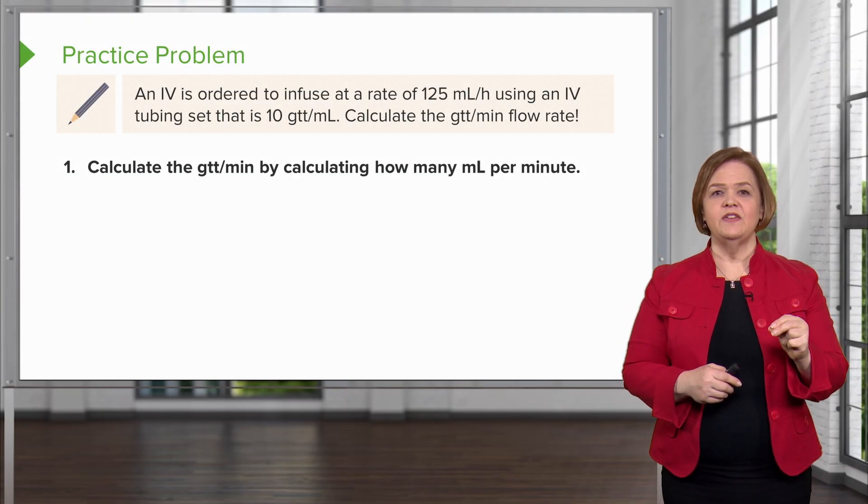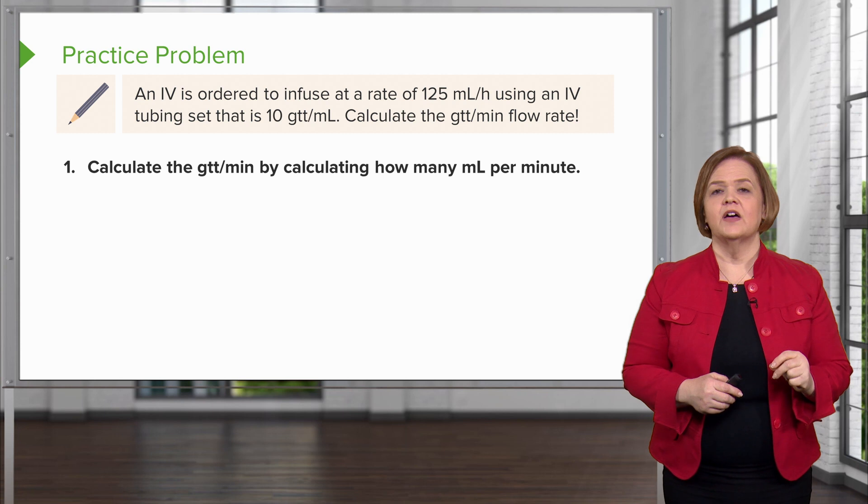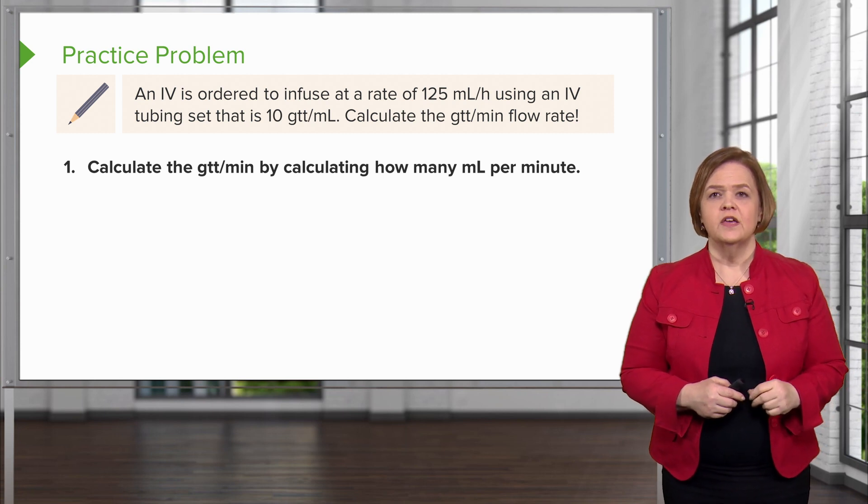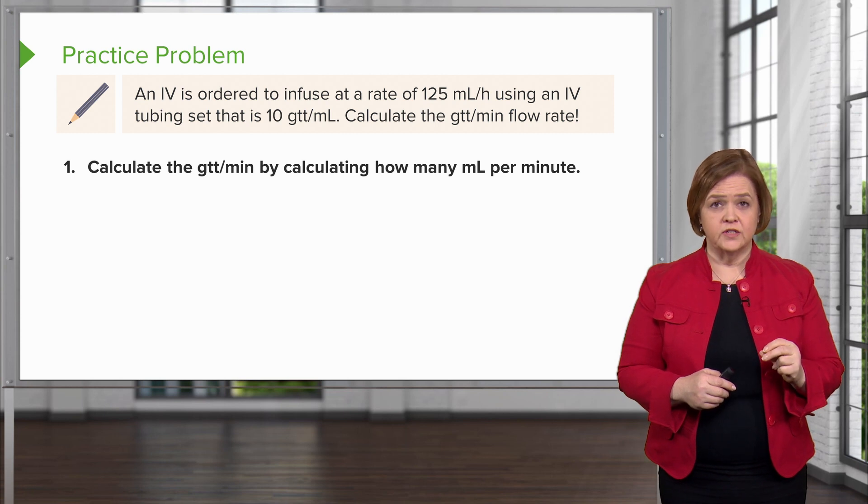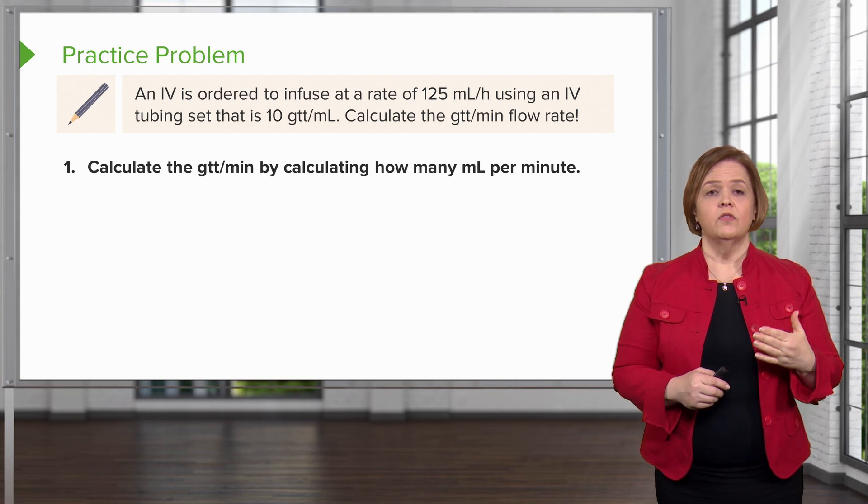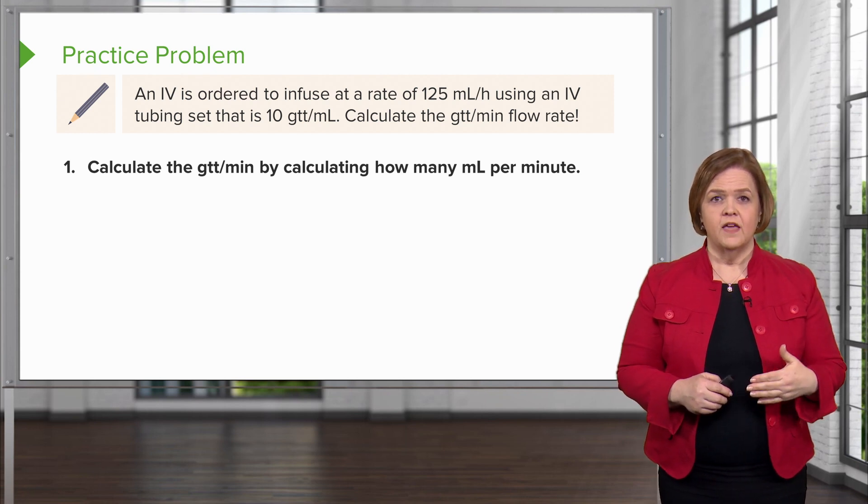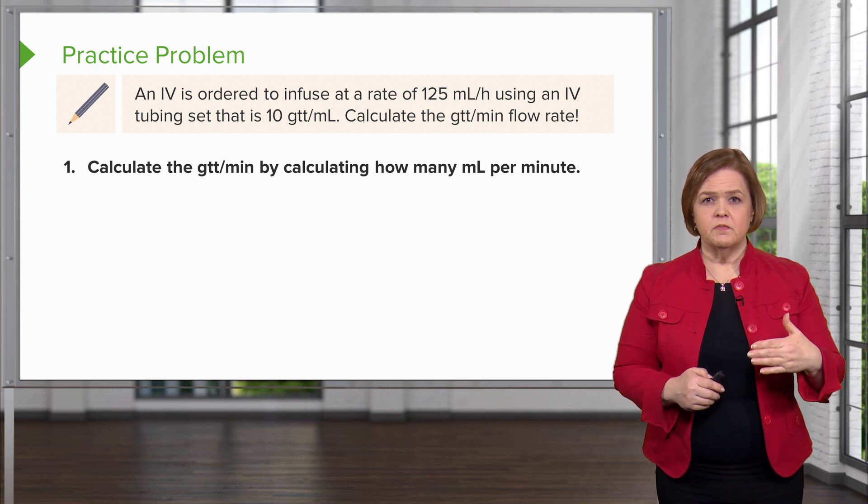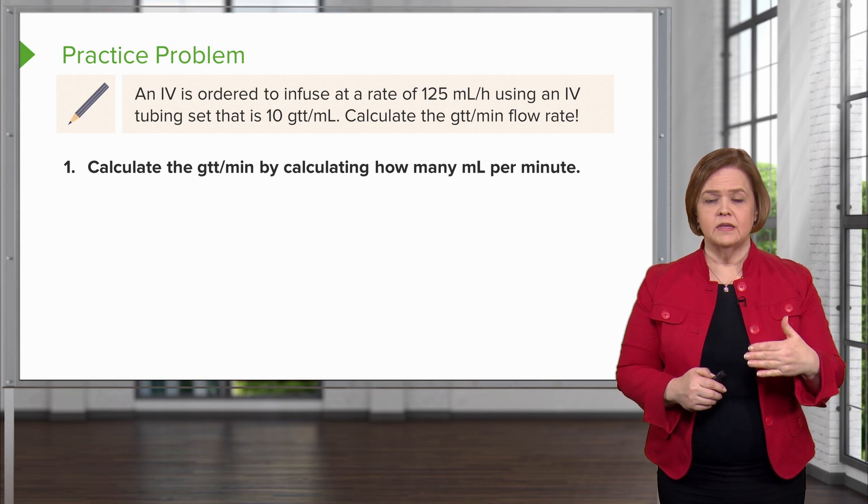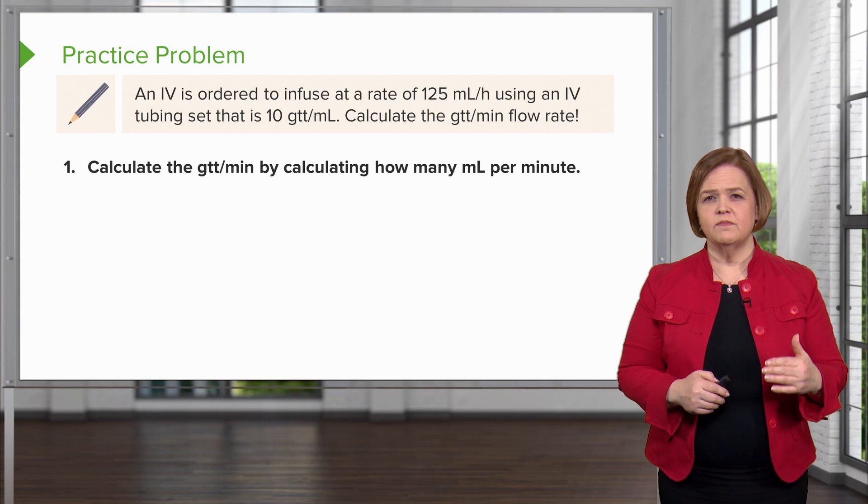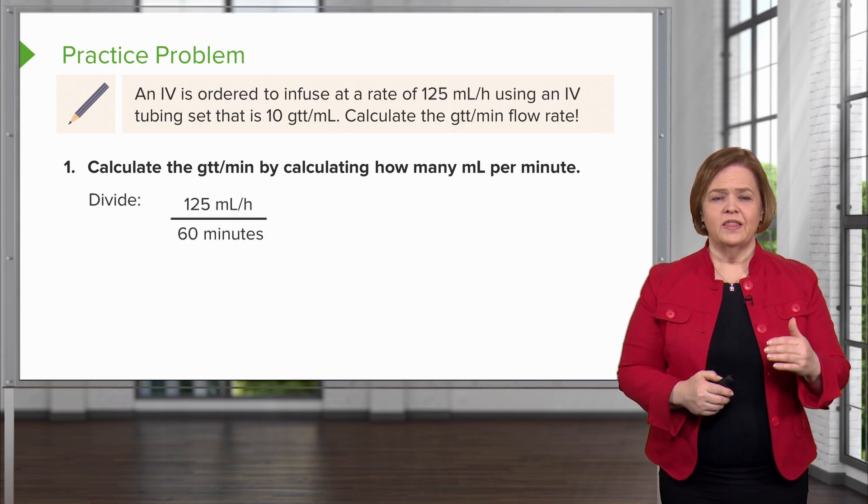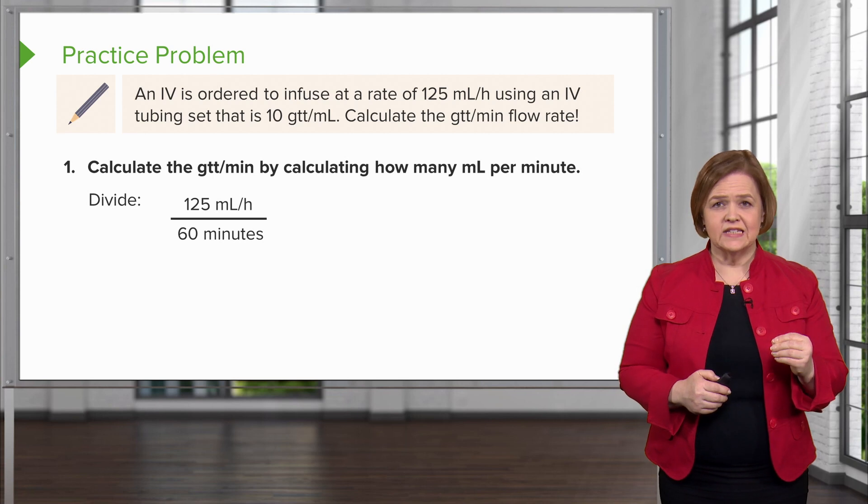We've got an IV ordered to infuse at 125 mL per hour using IV tubing that is 10 drops per milliliter. Calculate the drip rate, the flow rate. We're going to calculate the drops per minute by first calculating how many milliliters per minute. It's 125 milliliters per hour, so let's divide 125 by 60.